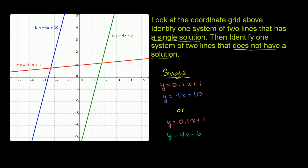Now the second part of the problem — they say identify one system of two lines that does not have a solution. So no solution. In order for there to be no solution, that means that the two constraints don't overlap — there's no point that is common to both equations, no pair of x, y values that's common to both equations. And that's the case of the two parallel lines here, this blue line and this green line, because they never intersect.